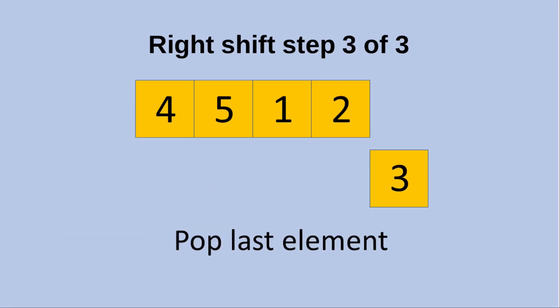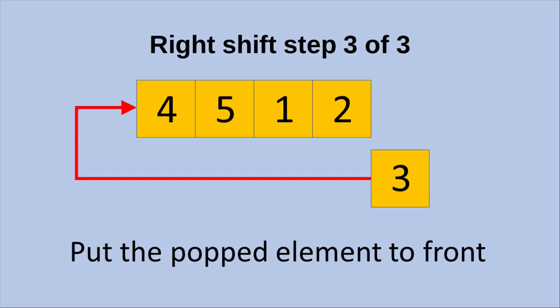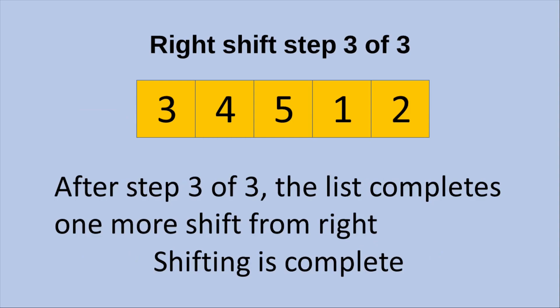Now we do the final step of the three steps. We pop the last element, which is 3, and then put the popped element to the front of the list. After the movement, we have 3, 4, 5, 1, and 2 as the ordered elements. After the final step, which is step number 3, the list has completed one more shift from the right-hand side. The shifting is now complete, and the numbers will remain in this order.